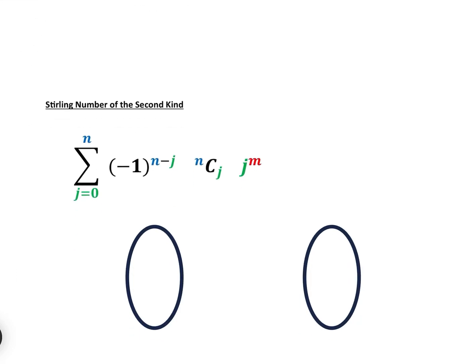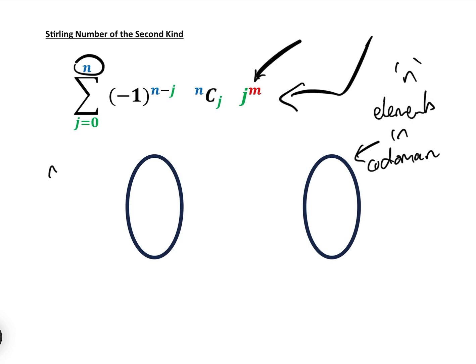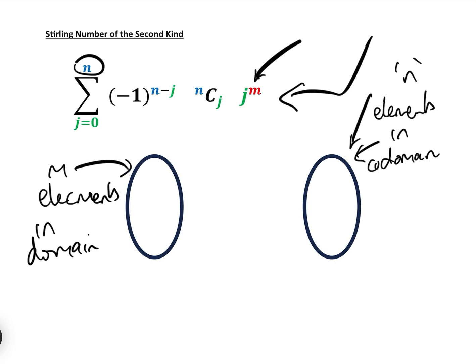To solve both of them, we use the Stirling number of the second kind. This is the formula for the Stirling number of the second kind — which looks a little horrific but isn't. Here n is the number of elements in the codomain and m is the number of elements in the domain. Remembering that m must be greater than n, because otherwise it would be bijective or there cannot be any surjective.